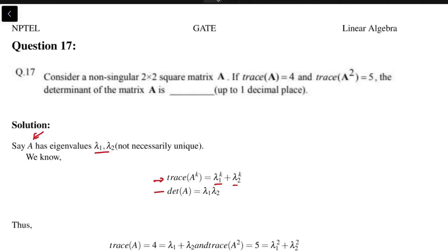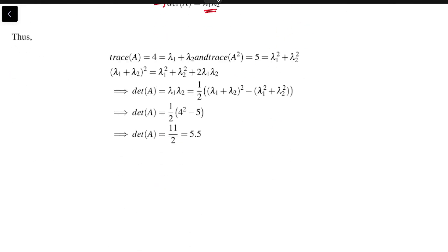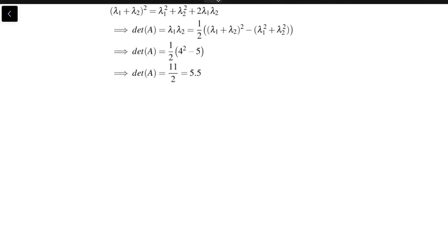We are given that trace of A is equal to 4, that is λ₁ + λ₂ = 4, and trace of A square, that is λ₁² + λ₂² = 5. So therefore we know that (λ₁ + λ₂)²...